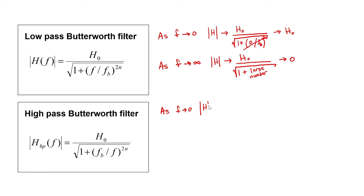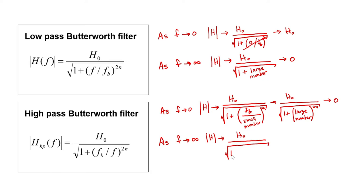Let's now do the same thing with the transfer function for a high-pass Butterworth filter and see what happens. As the frequency approaches zero, the transfer function approaches zero. As the frequency gets large, that is, as the frequency approaches infinity, the magnitude of the transfer function approaches its DC value H0.